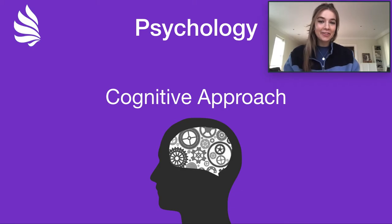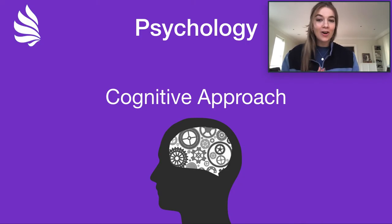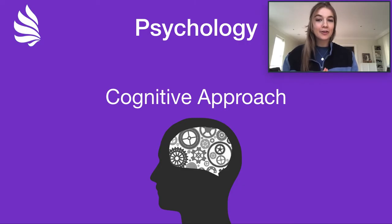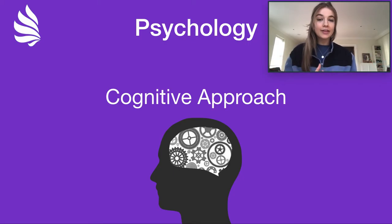Hey everyone, welcome back to another video. My name is Laura for those of you who haven't seen a video from me yet, and today we're going to take a look at IB psychology and specifically the cognitive approach. We're going to keep going from the last video. Last time I talked about schema theory, and what we discussed is that schemas aren't the most reliable and they're quite susceptible to external influences — and that's kind of the gist of a lot of topics within the cognitive approach to psychology.